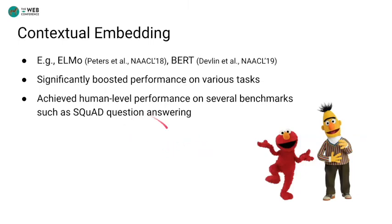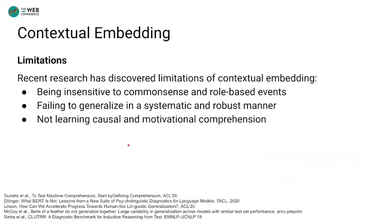In natural language processing, contextual embeddings such as ELMo and BERT have significantly boosted performance on many tasks and even reached human performance on several tasks such as SQuAD reading comprehension. However, some recent papers at ACL, TACL, and EMNLP also discovered limitations of contextual embedding models such as common sense, role-based events, systematic generalization, causality, and motivation.